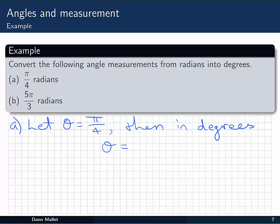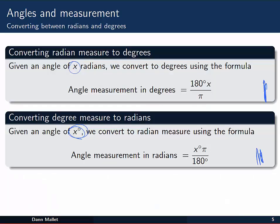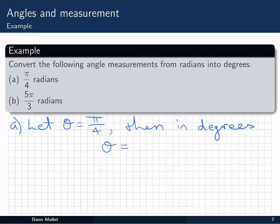Okay, so if I let theta equal π on 4 radians, then in degrees, theta is going to be equal to, jumping back to our first formula here, it's going to be 180 degrees times the measurement in radians divided by π. So 180 degrees multiplied by π on 4 divided by π. The π's will cancel, and I'll be left with 180 on 4, which is 45. And we've got degrees now.